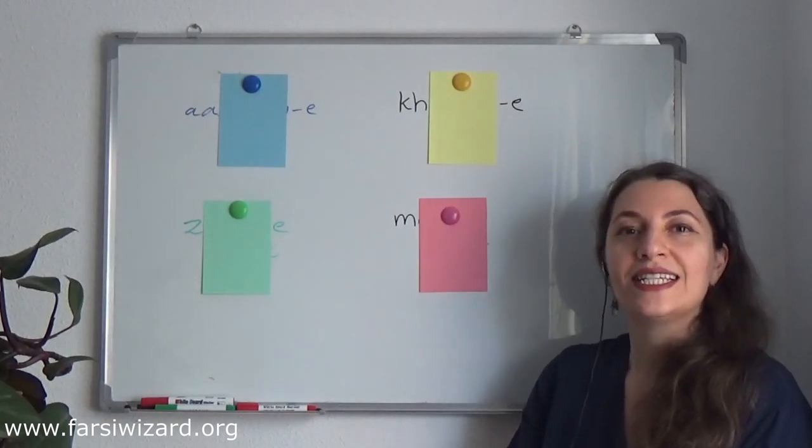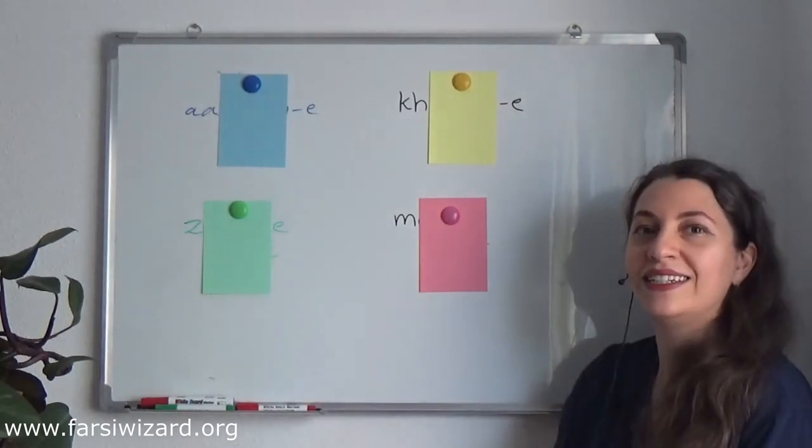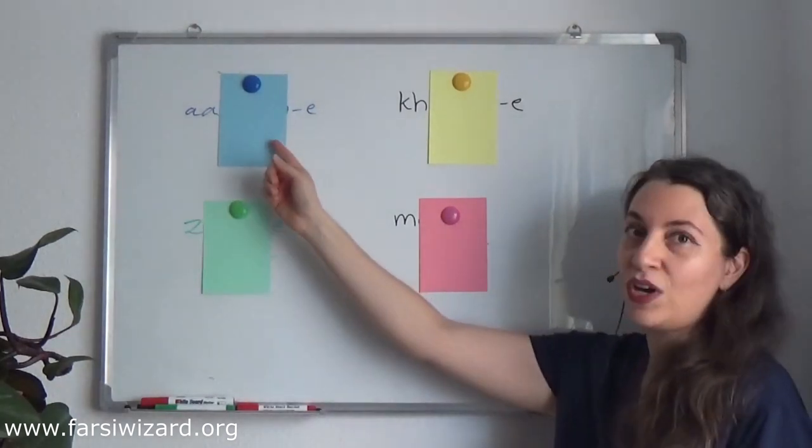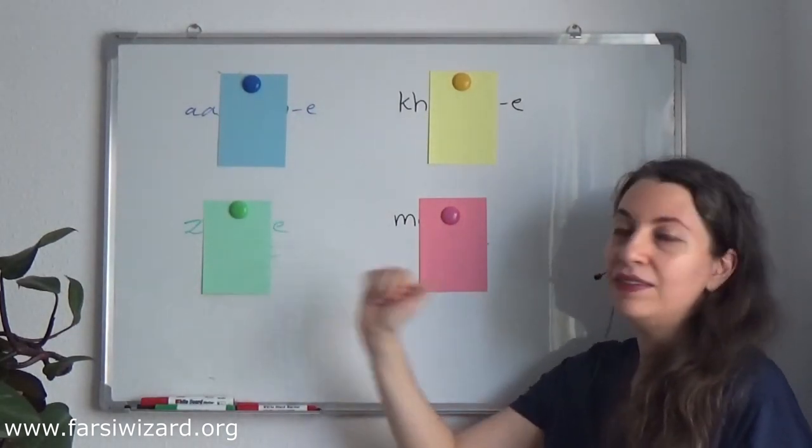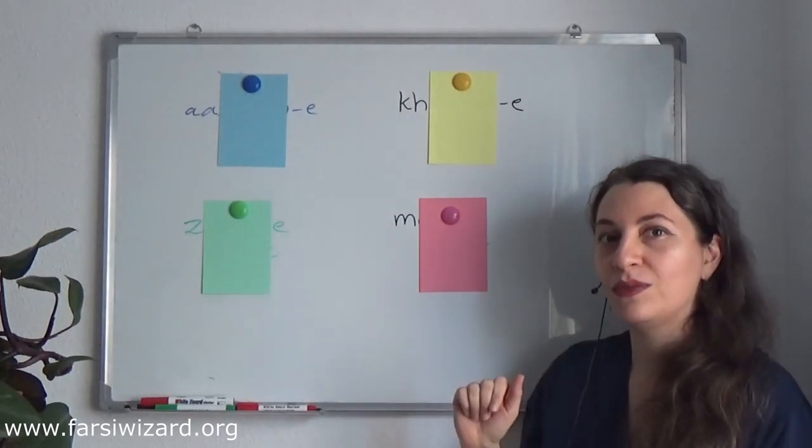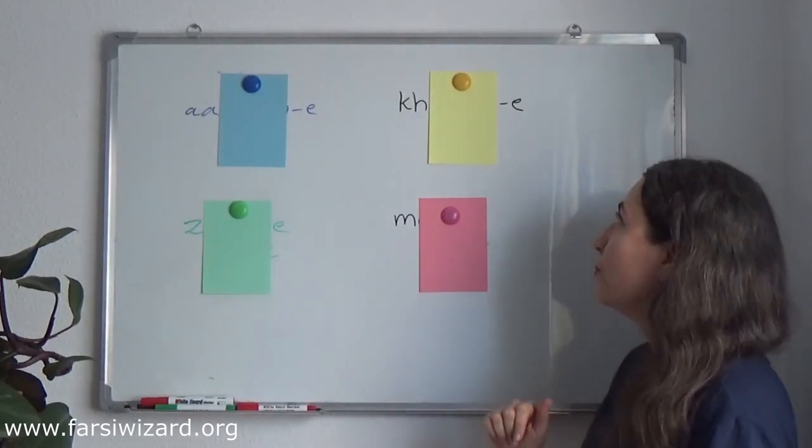Right, it is zamin, zamin. Okay, so so far we have āsmān and then we have zamin. But you're not seeing the words yet because I have another test for you.